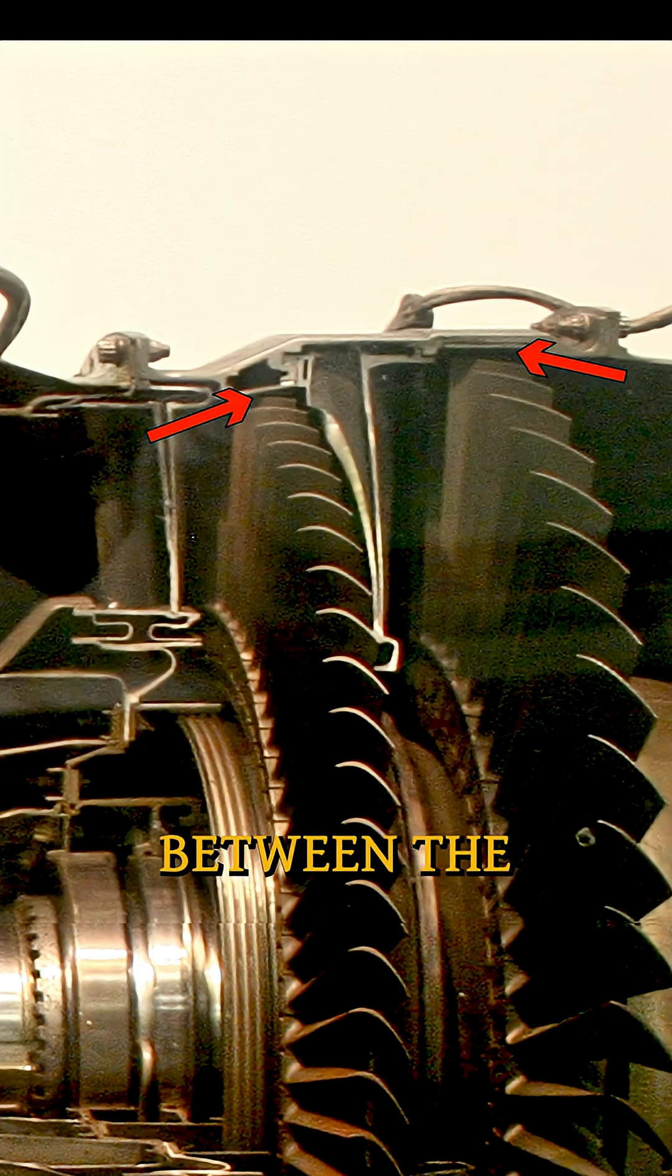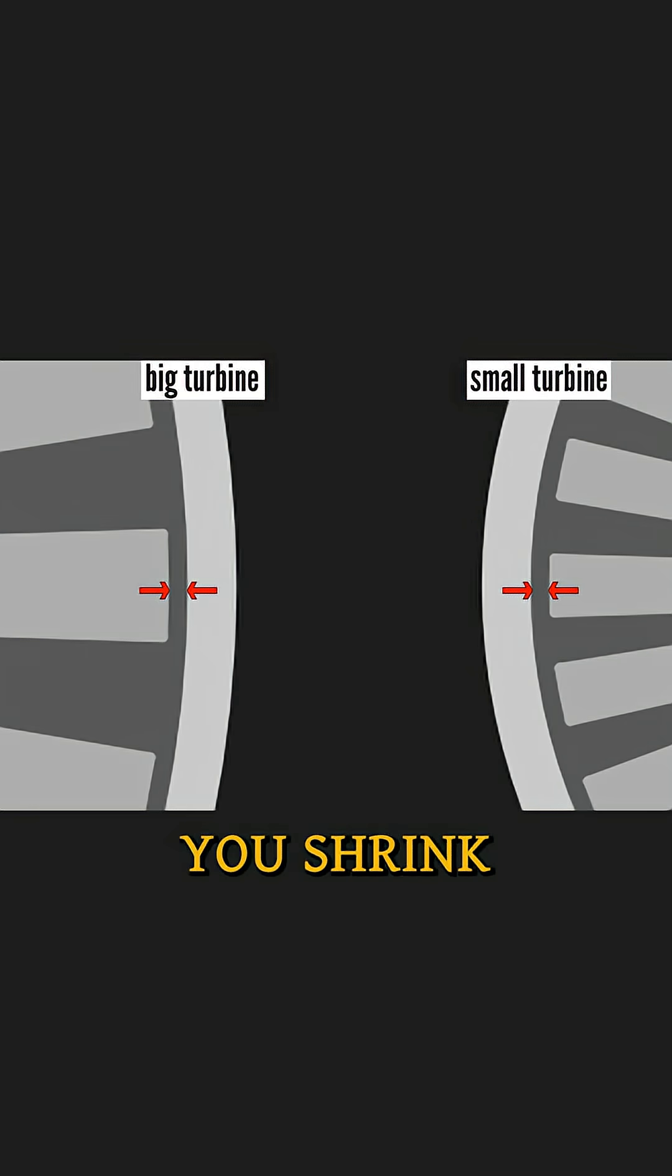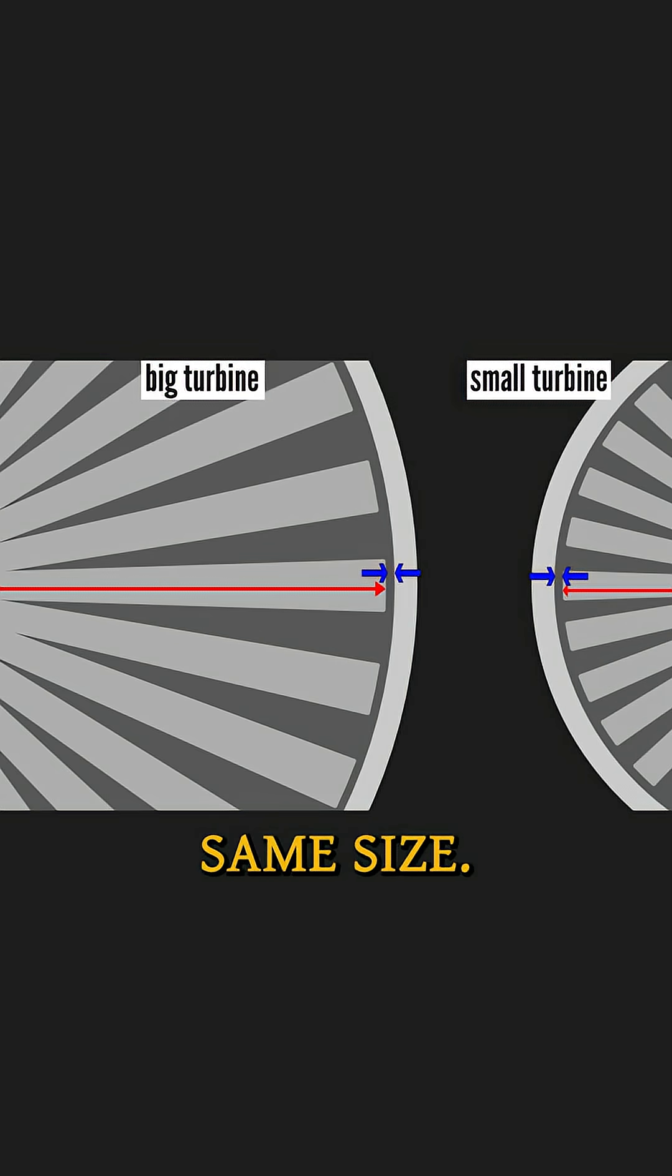There's always a small gap between the spinning turbine blades and the engine casing. That's just how gas turbines are built. But when you shrink everything down, these gaps don't shrink much. They stay roughly the same size.